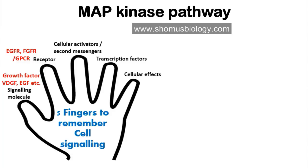The third important parameter is cellular activators or second messengers. The cellular activators used in the MAP kinase pathway form a signaling cascade. It goes: GRB2, which has a SOS domain, then GEF (a GTP exchange factor), which activates the most important cellular protein in this pathway — RAS. RAS protein is the most important component of the MAP kinase pathway.